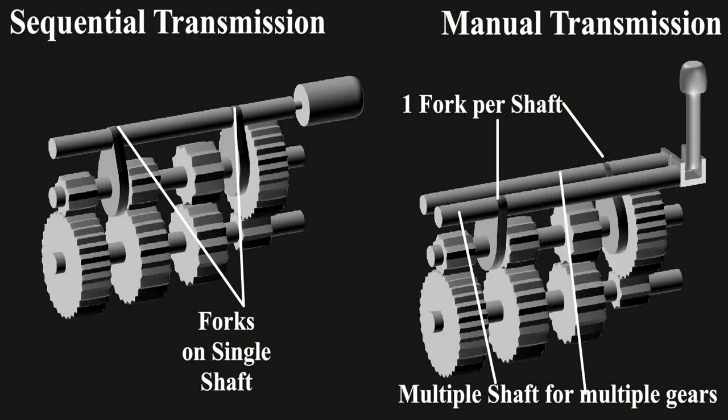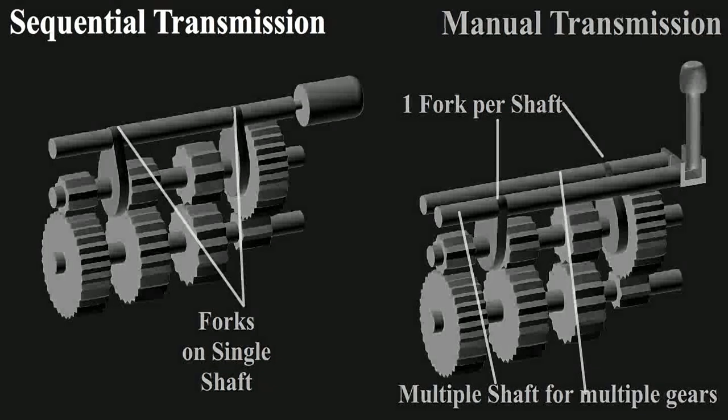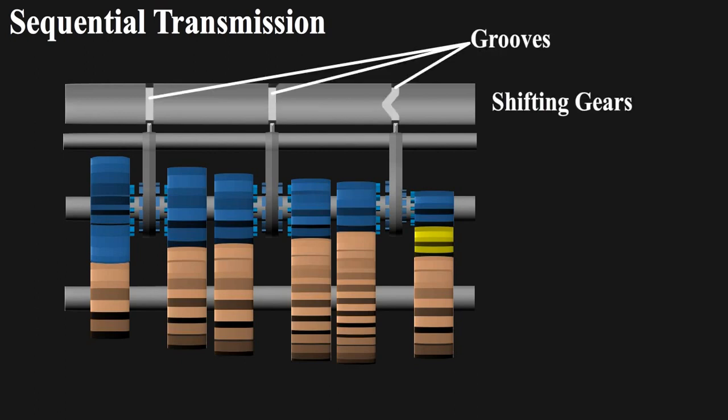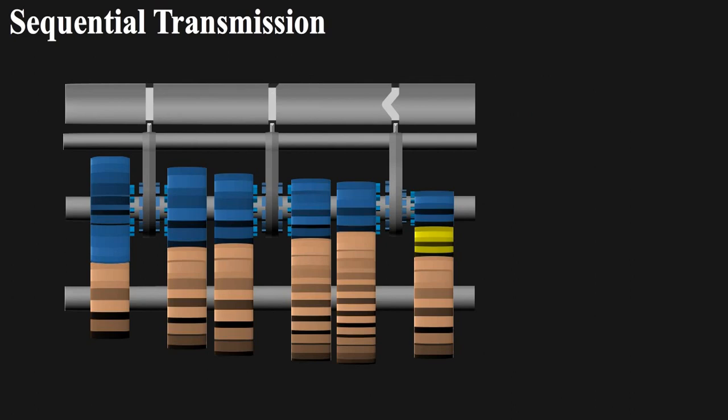The sequential transmission has one more shaft, which does the work of shifting gears. This shaft has grooves on it, designed in a special way. The selector forks have pins on them, which mesh in these grooves.